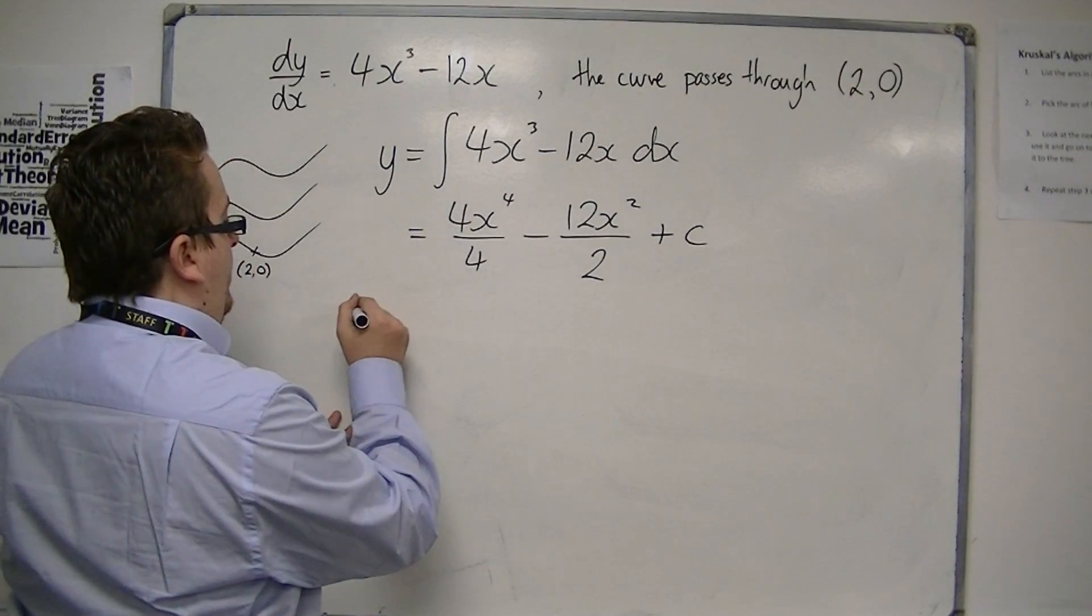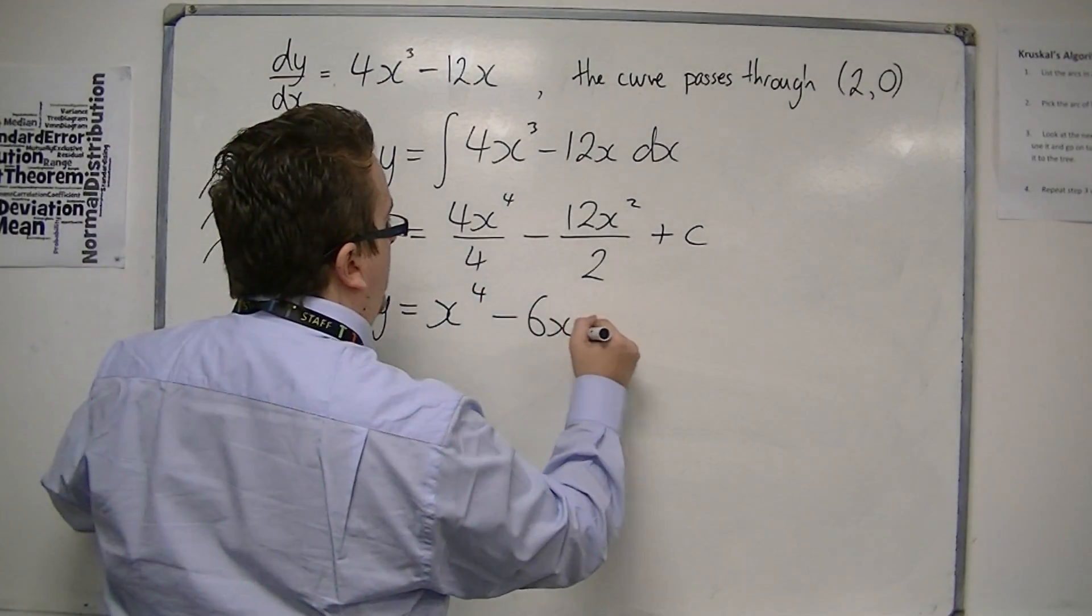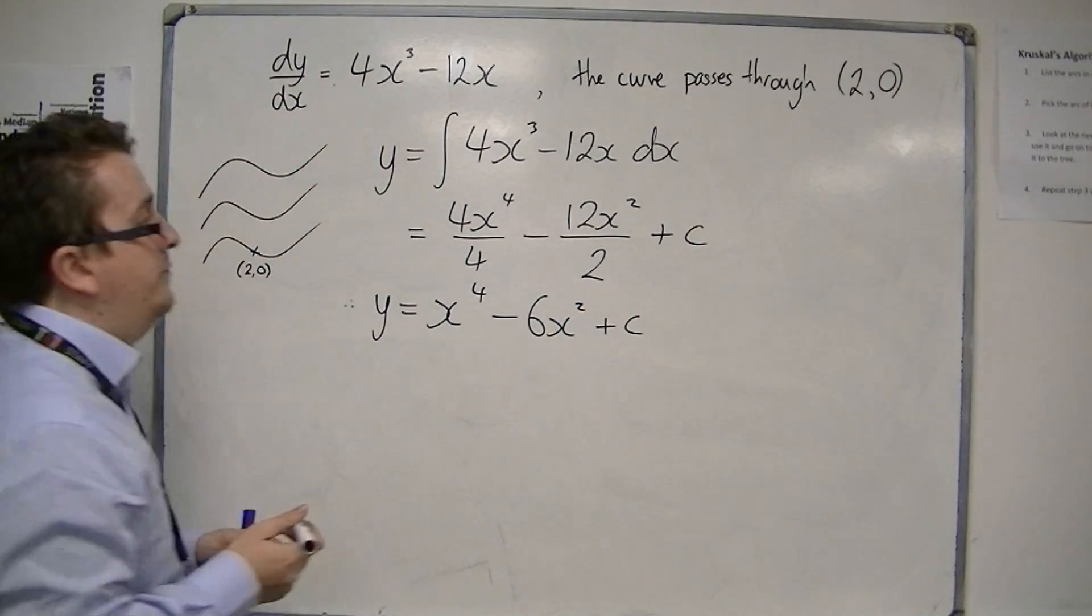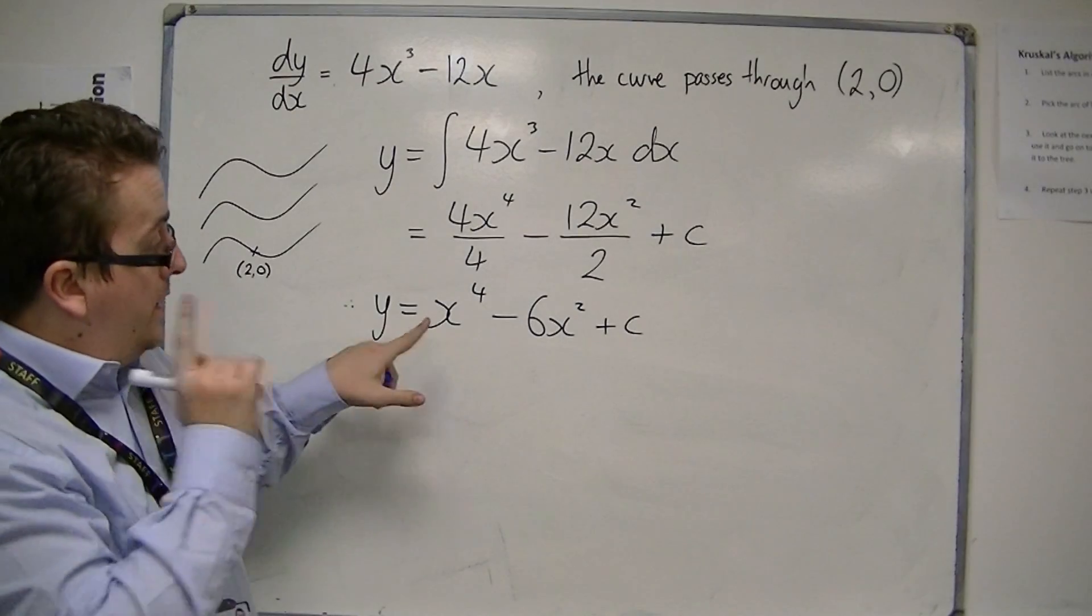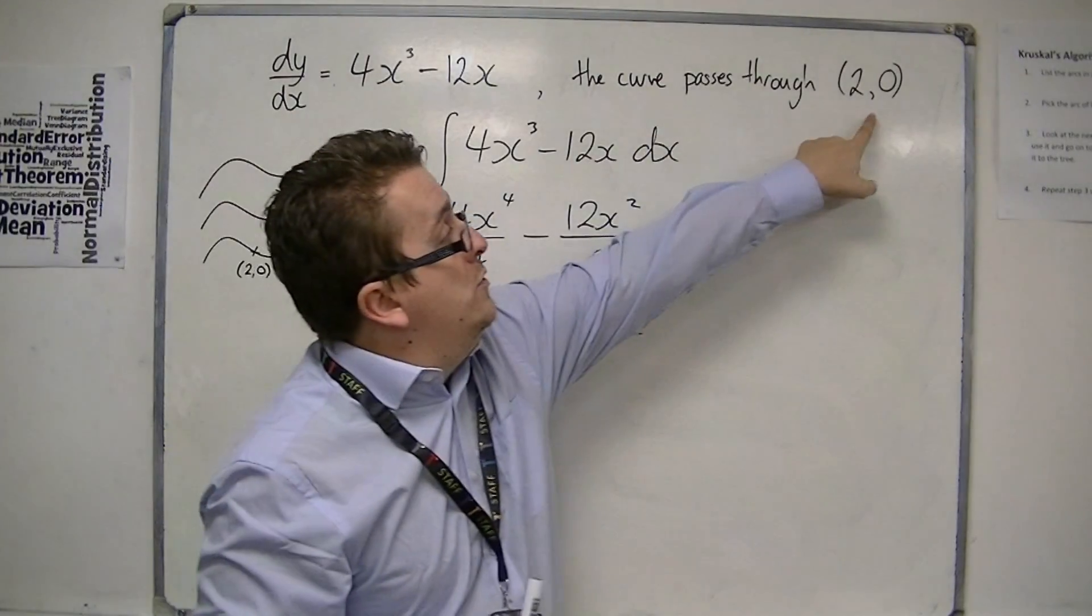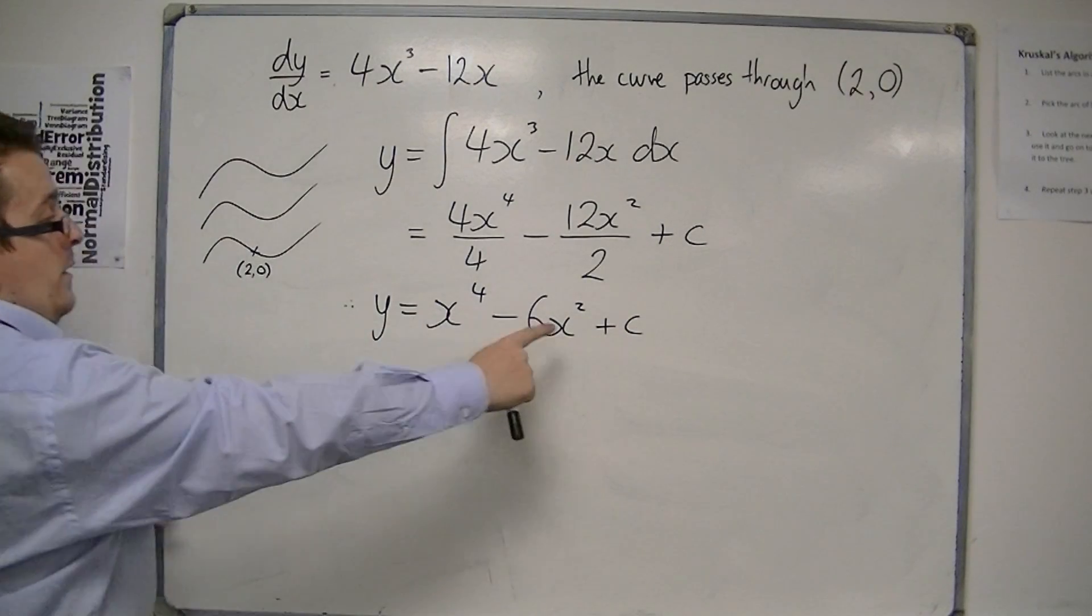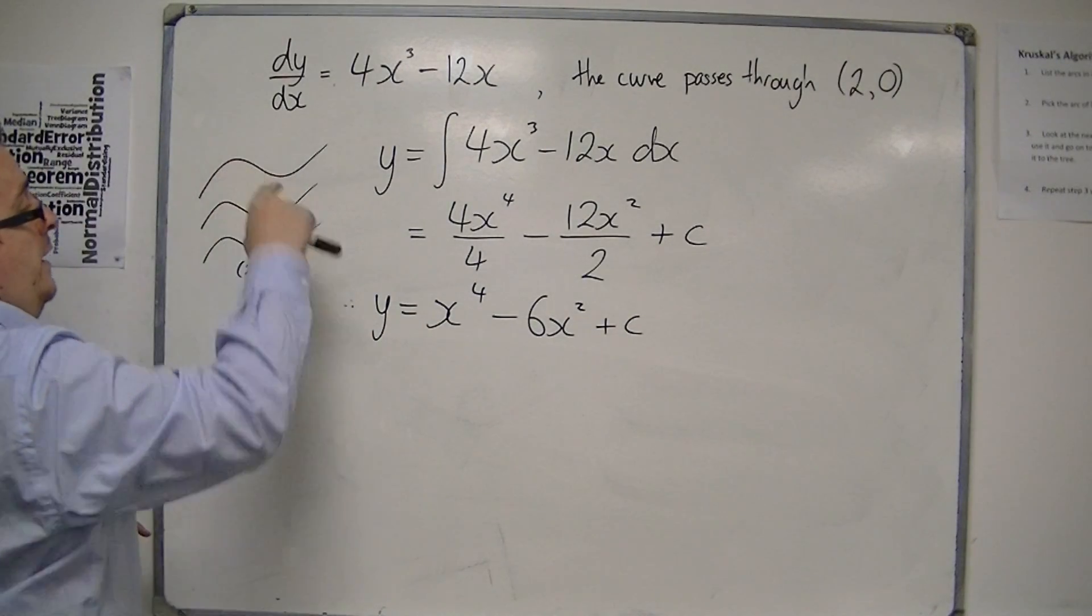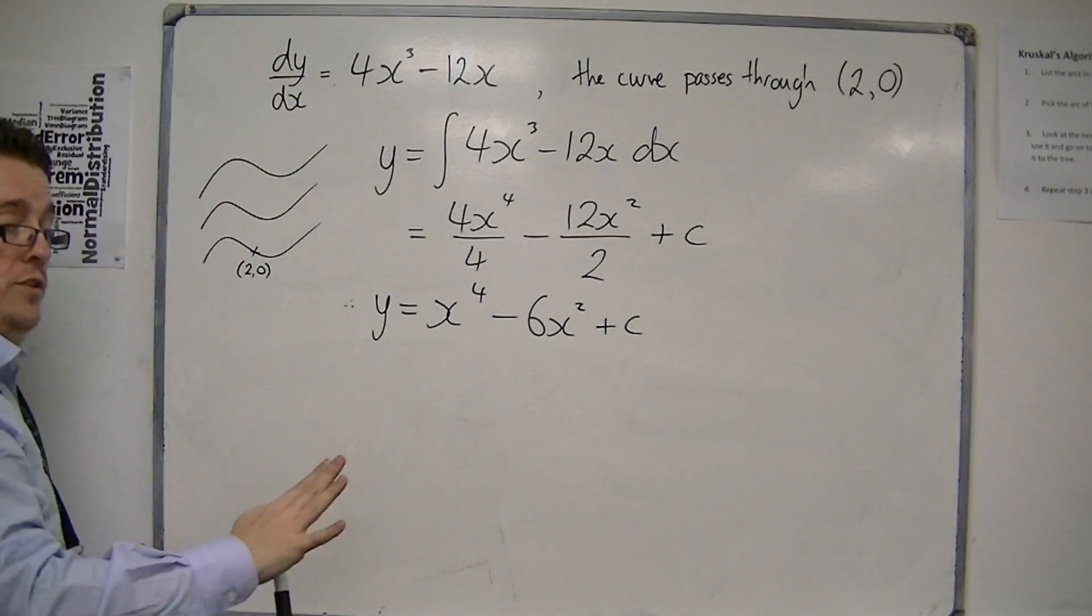We can simplify this. So y is x to the 4 minus 6x squared plus c. Now we know that the curve goes through the point (2,0). This is a whole family of curves, and we're finding that one that particularly goes through (2,0). So we substitute in that coordinate.